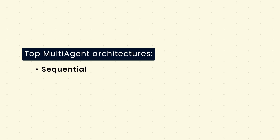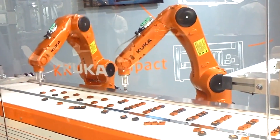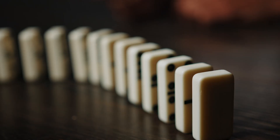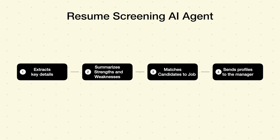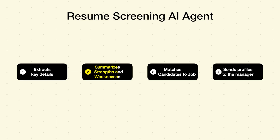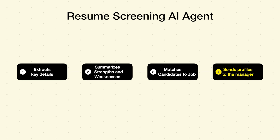The first multi-agent architecture is sequential — like an assembly line approach. This is the simplest pattern: each agent performs a task and passes the result to the next agent. A good example is AI-powered resume screening and hiring, where agent 1 extracts and categorizes key resume details like name, experience, and skills; agent 2 summarizes candidates' strengths and weaknesses; agent 3 matches candidates to job descriptions; and agent 4 sends shortlisted profiles to the hiring manager. This structure ensures a clear workflow but can be slow because each step depends on the previous one.